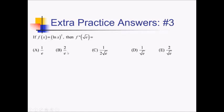For this problem, this looks like it shouldn't take a whole lot of time, but it's actually a little bit involved. We're given this f of x function, and we want f double prime of radical e. So let's start by taking the first and then the second derivative of f. For the first derivative, f prime, we just have to use the power rule along with a little chain rule on the ln of x term. We have something squared — derivative of that is 2 times ln of x. Then we multiply by the derivative of ln of x, which is 1 over x.